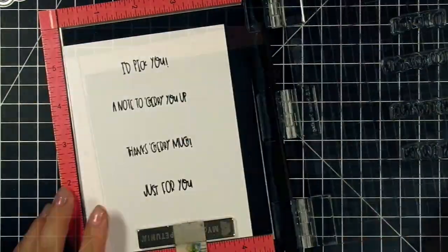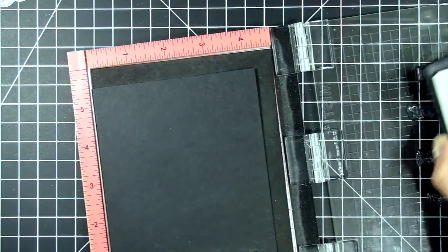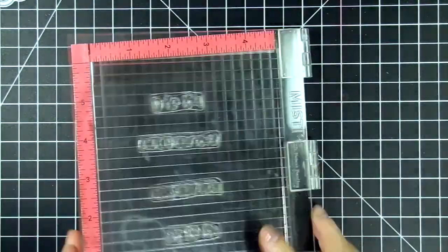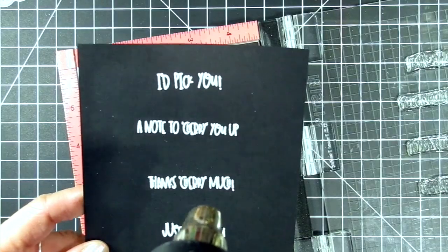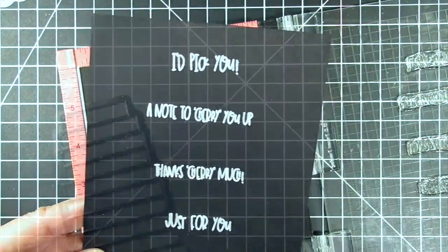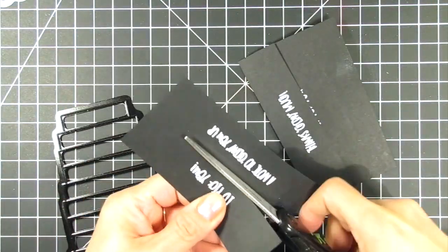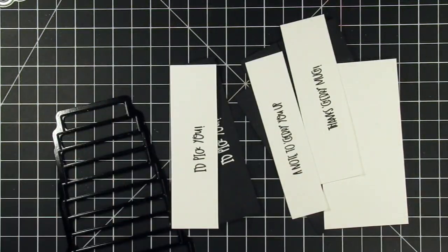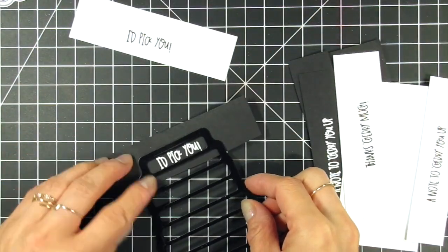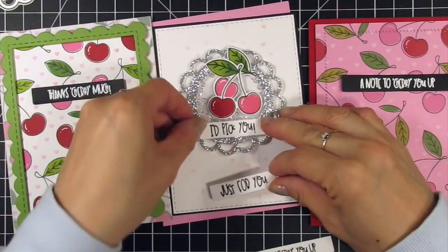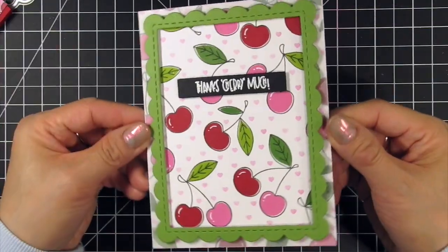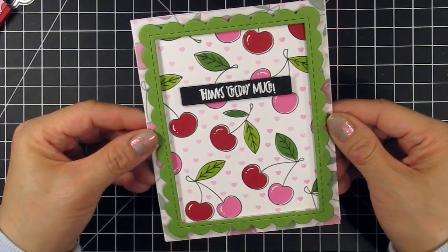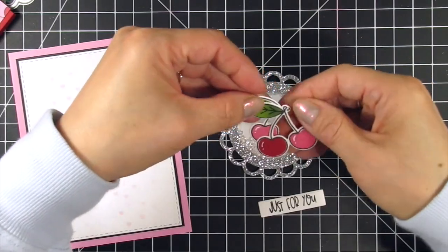I couldn't decide on the sentiments so I decided to stamp several and decide once they were all stamped and die cut. First I stamped them in Oreo ink on sugar cube cardstock. Then I stamped them again using watermark ink on Oreo cardstock and heat embossed them using white embossing powder. I cut the sentiments apart since I was using the mini strips backer die. I added 'thanks cherry much' to my first card. I selected the black sentiment strip since it popped against the white background and green frame and I attached it with foam tape.